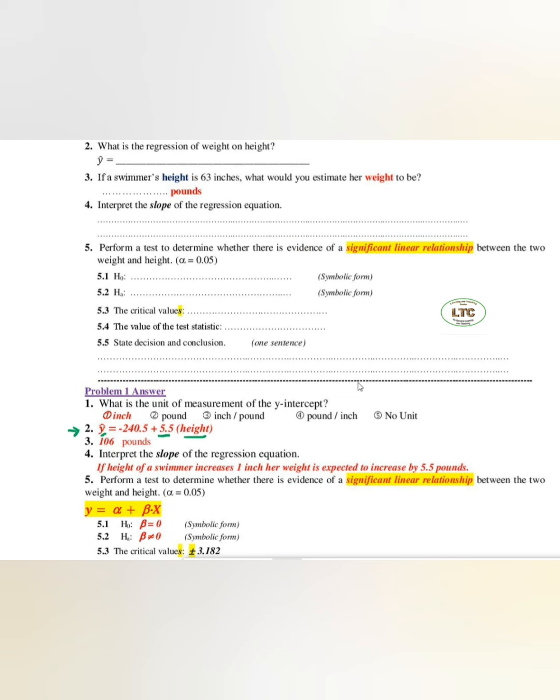According to this equation, if you increase height by 1 inch, then you will see y hat will increase by 5.5 pounds. So 5.5 pounds for every inch. Therefore the unit is 5.5 pounds per inch.